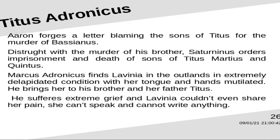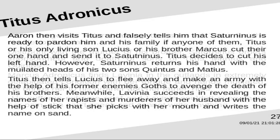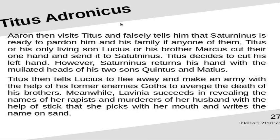Marcus Andronicus finds Lavinia in the outlands in an extremely dilapidated condition with her tongue and hands mutilated. He brings her to her father Titus. Titus suffers extreme grief, and Lavinia couldn't even share her pain — she can't speak and cannot write anything. Aaron then visits Titus and falsely tells him that Saturninus is ready to pardon him and his family if any one of them — Titus, his only living son Lucius, or his brother Marcus — cuts their one hand and sends it to Saturninus.